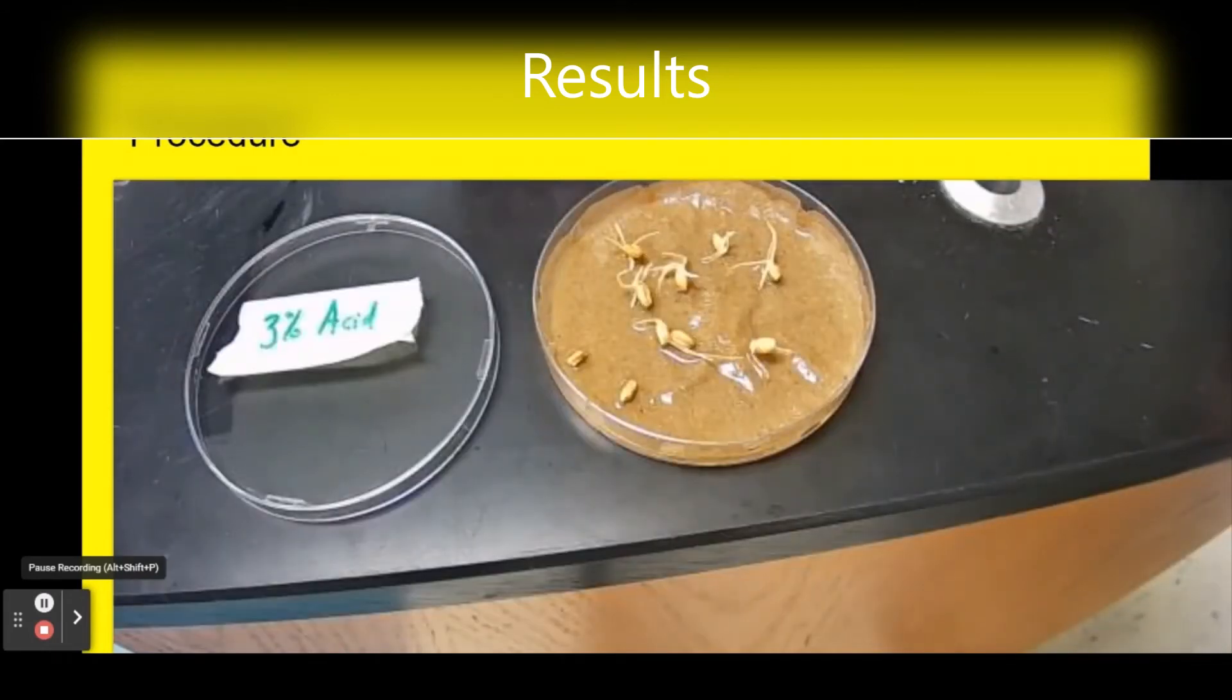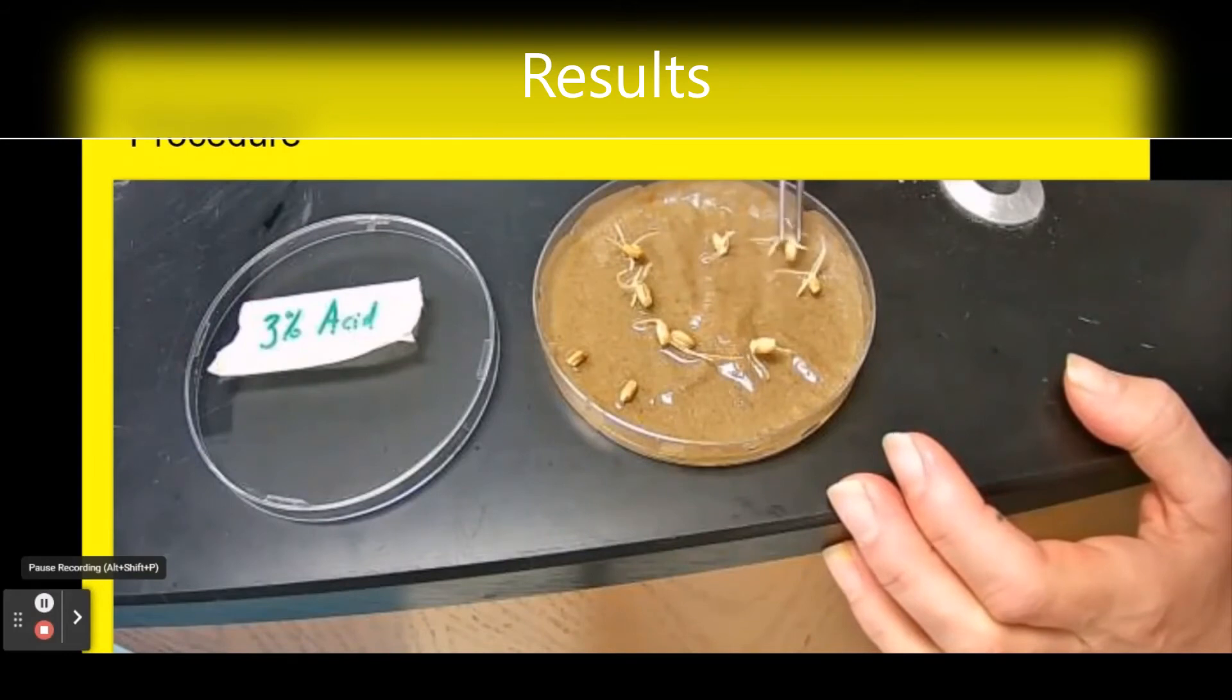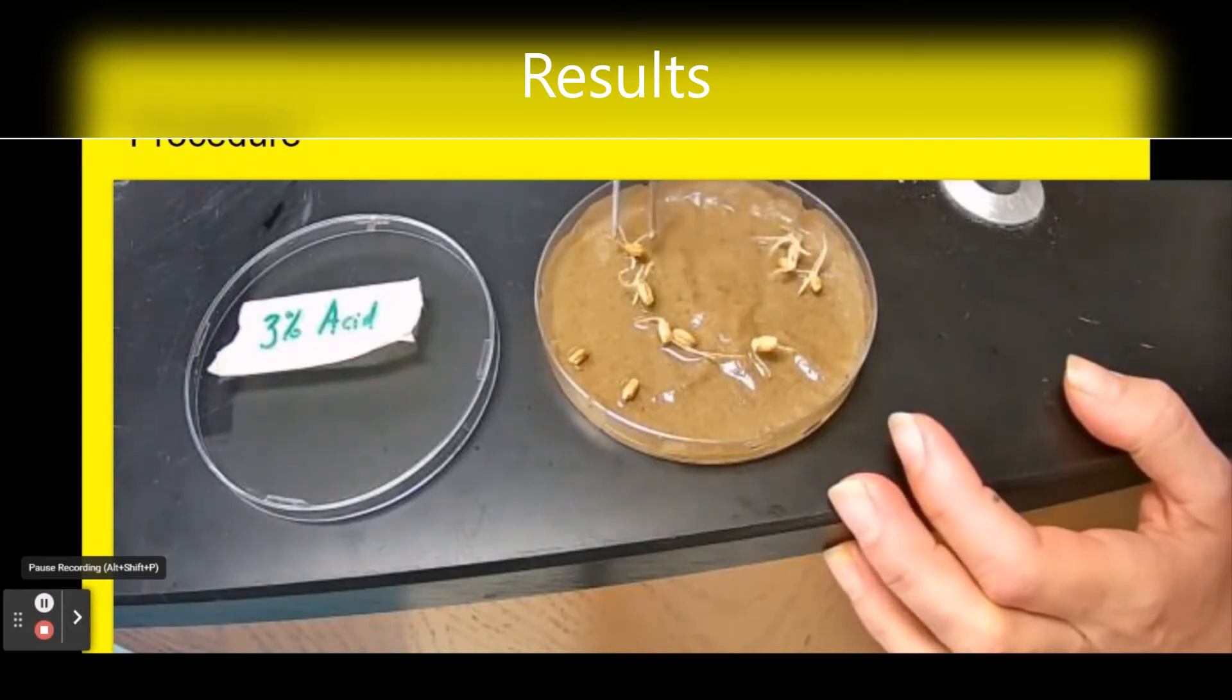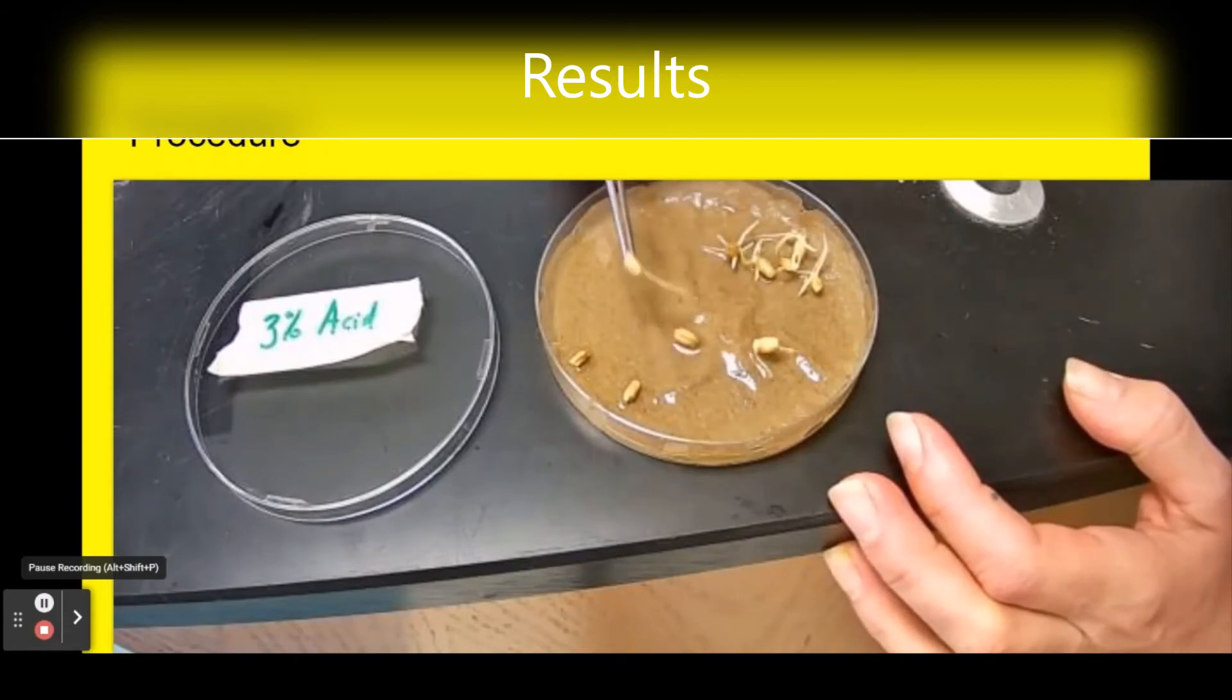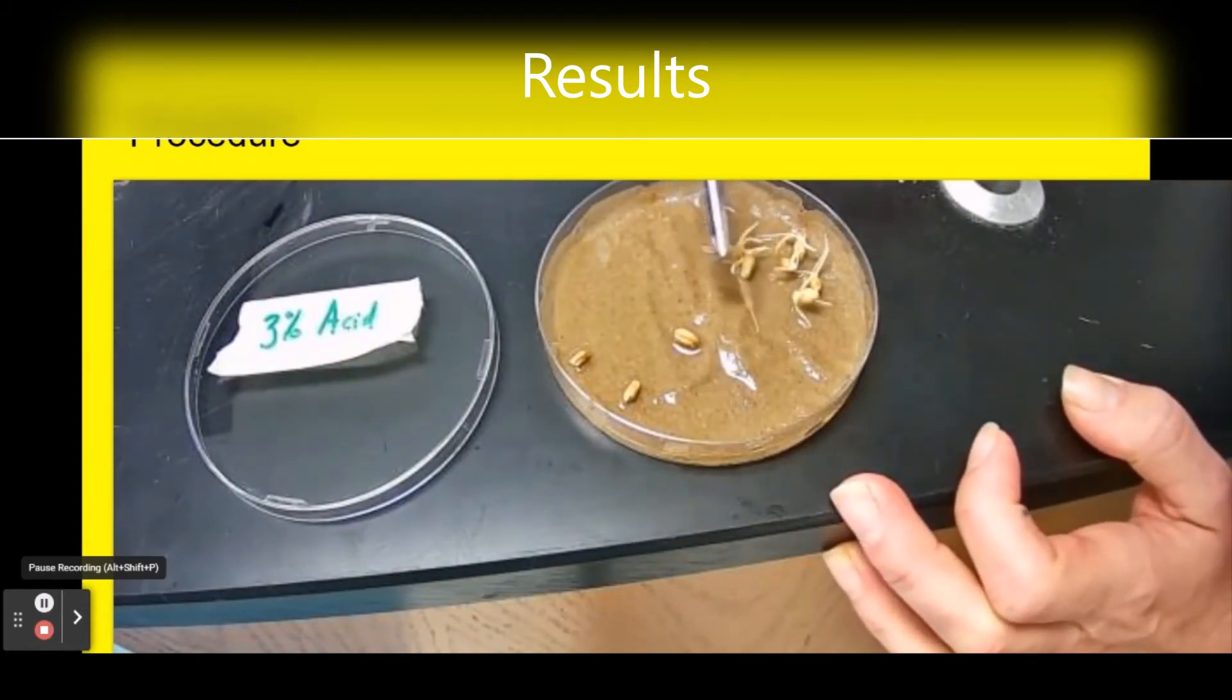Here we've got three percent acid. I'm noticing these are getting a little bit smaller, the sprouts are a little bit less pronounced. Two, three, four, five, six, seven have sprouted and three did not, but there's also a difference in the length of the sprouted material, how much it grew is a little bit less.